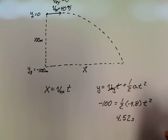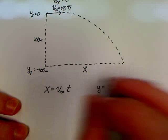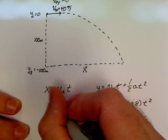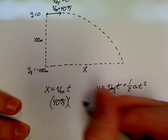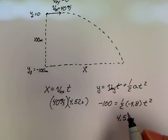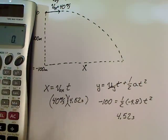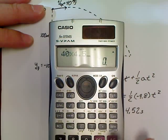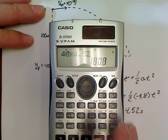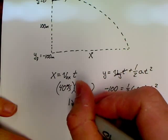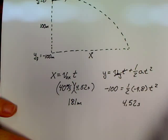So it takes 4.52 seconds for the package to reach the ground. The package is traveling horizontally at 40 meters per second, and that gives us a final speed or a distance. If we work it out, 40 times 4.52, 180.8, so I'm going to round off and say we have 181 meters of distance traveled. So I'll call this my point part A.